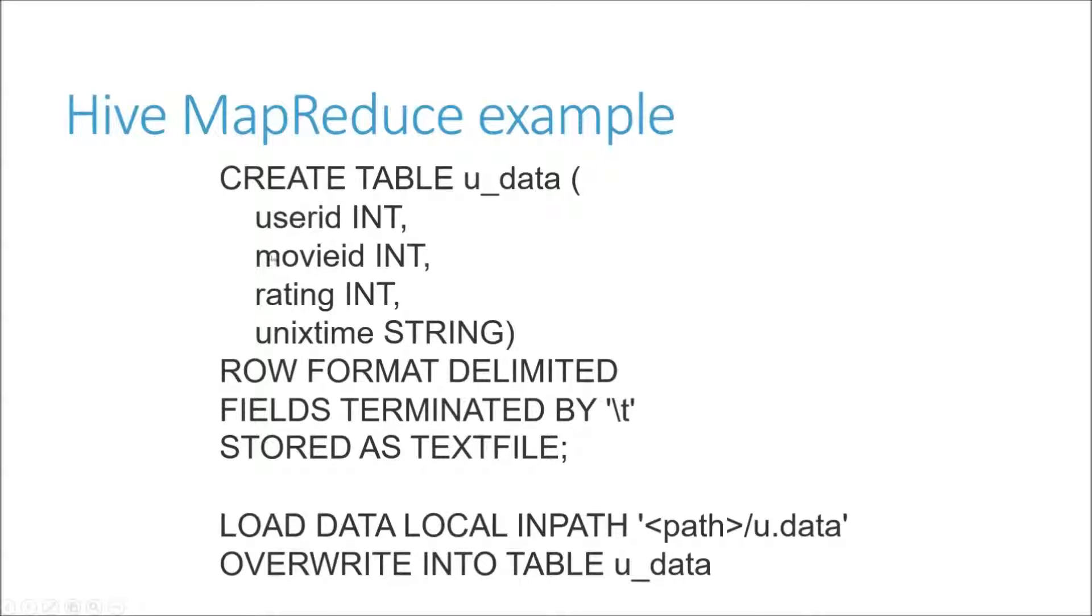We're saying that we have a bunch of rows that are delimited by tab characters stored as plain text, and we're going to extract them as a user ID, a movie ID, a rating, and a timestamp. We can just load that right into our table from the u.data file through this loadDataLocalEmpath command.